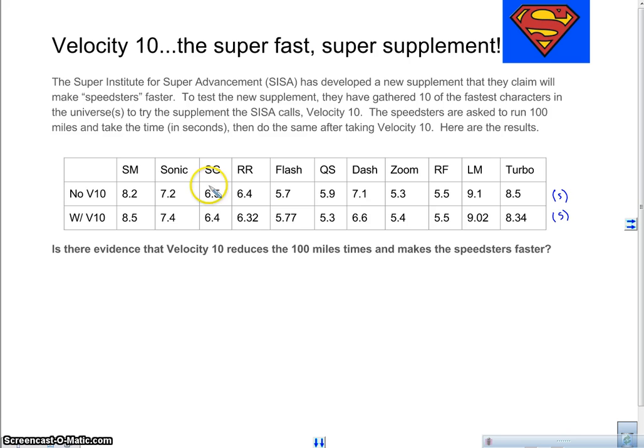However, these are not independent times because the same people are running the same distances, right? So since we have the same people, these two times are dependent upon who ran the race. So we're not doing an independent two samples t-test. We're doing what we call a paired t-test. Now for a paired t-test, what we're really interested in is do these differences make them faster?